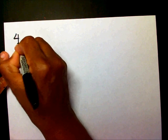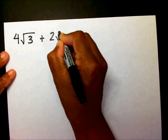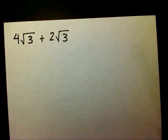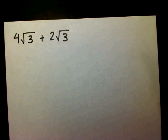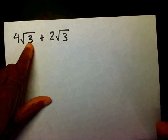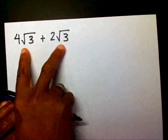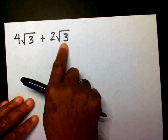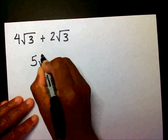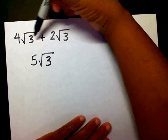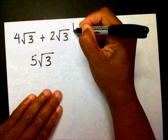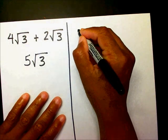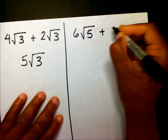Let's increase it now. What if I had four radical threes plus two radical threes? Remember, you want to make sure that your radicals are in simplest form. I have radical three here and radical three here — they're in simplest form. So I can add these two: four radical threes plus two radical threes. That's just like saying I have four apples plus two apples.